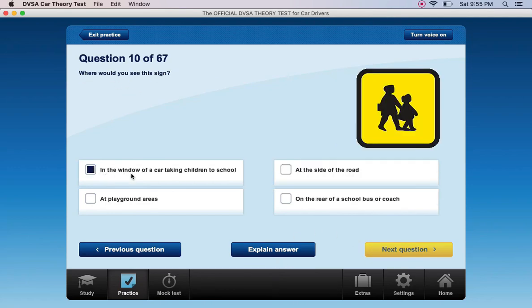Go very slowly. Where would you see this sign? In the window of a car taking children to school, at the side of the road at playground areas, or on the rear of a school bus or coach. On the rear of a school bus or coach.